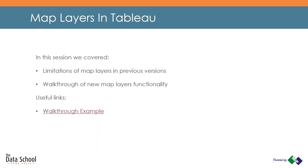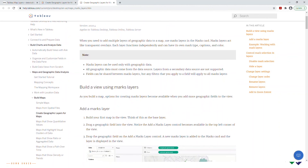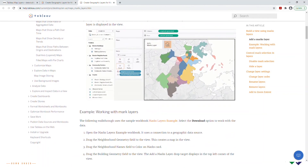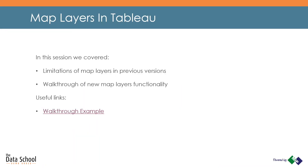So in this session, we have covered the limitations of map layers in previous versions of Tableau and walked through the new map layers functionality in Tableau 2020.4. For those of you who want to take what you've learned today and play around with the new map layers functionality, you can use this link from Tableau which gives you a step-by-step walkthrough of the new features using a sample workbook. I'd also like to give credit to this blog on Tableau map layers by Mark Read, on which I based my walkthrough. And with that being said, that concludes the presentation part of this session.